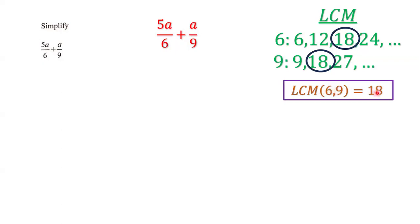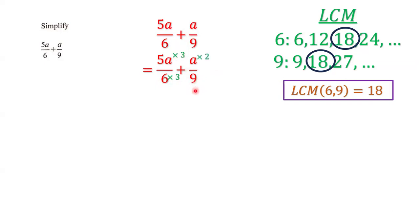The LCM of 6 and 9 is 18. We ask ourselves: what times 6 gives us 18? That's 3. Whatever we do to the bottom we must do to the top, so we multiply the top by 3 as well. What times 9 gives us 18? The answer is 2.